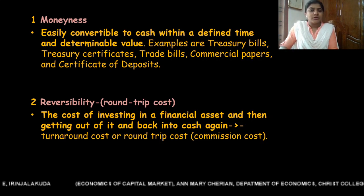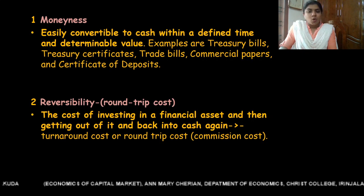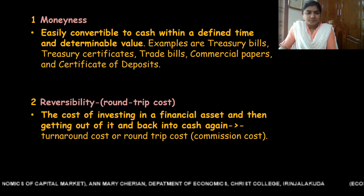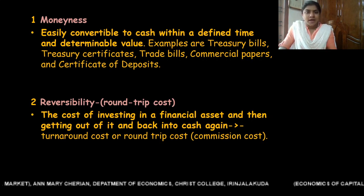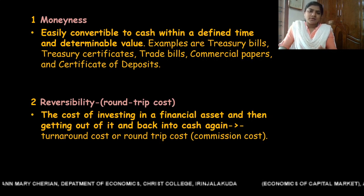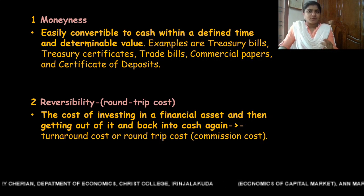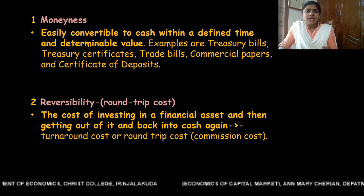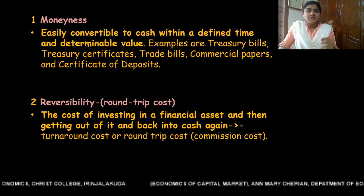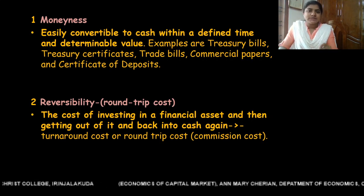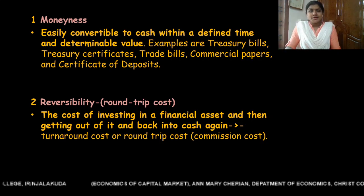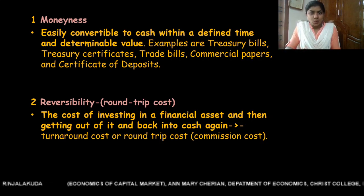The second property is reversibility. Reversibility means the cost of investing in a financial asset and then getting out of it and back into cash again. For example, an investor has cash and buys a financial asset. He then feels that keeping this financial asset is not profitable, so he sells it and converts it back into cash. This process is known as reversibility.